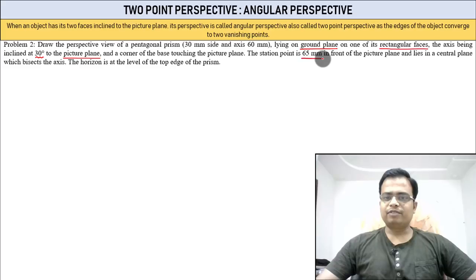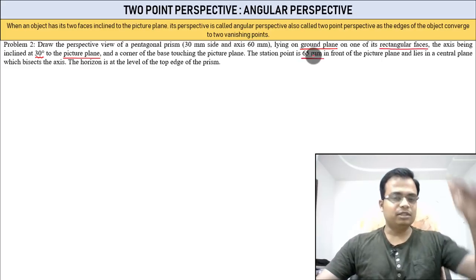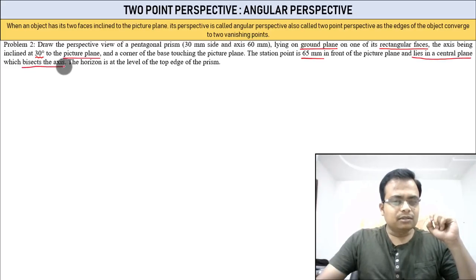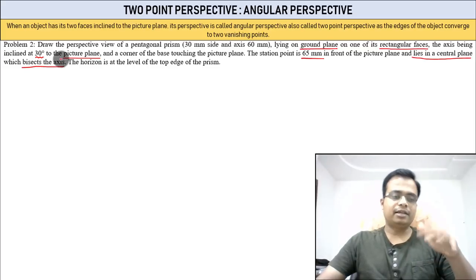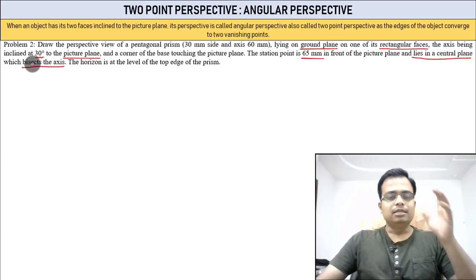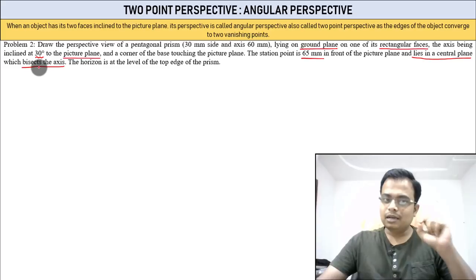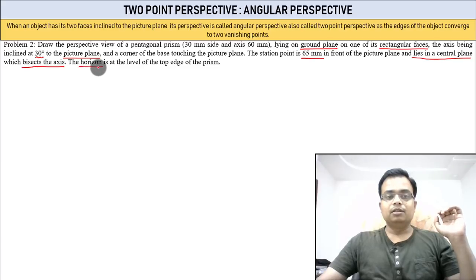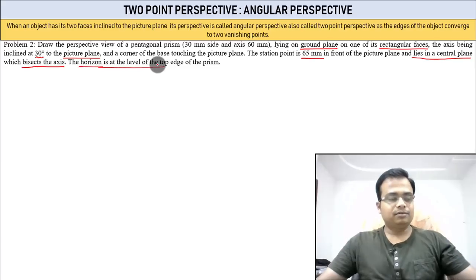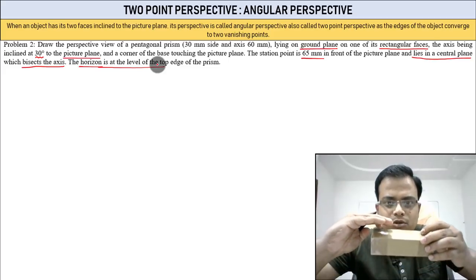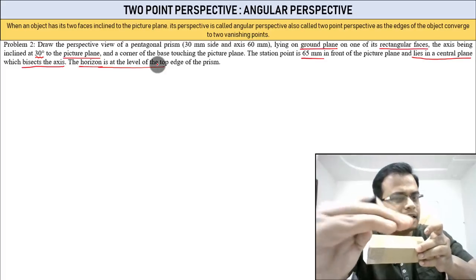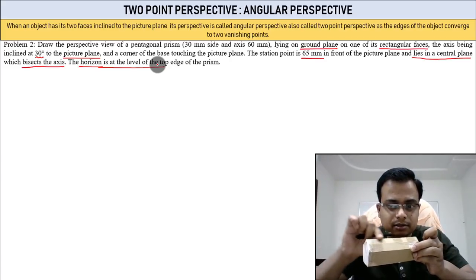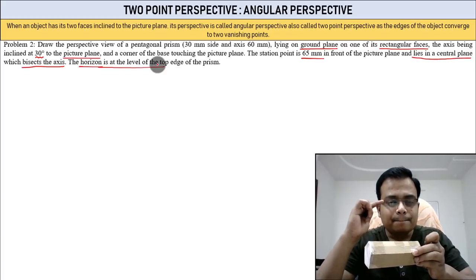The station point is 65 mm in front of the picture plane. It lies in a central plane which bisects the axis. The horizon is at the level of the top edge — your eye level is right at that top edge. This is something to implement on the drawing sheet.